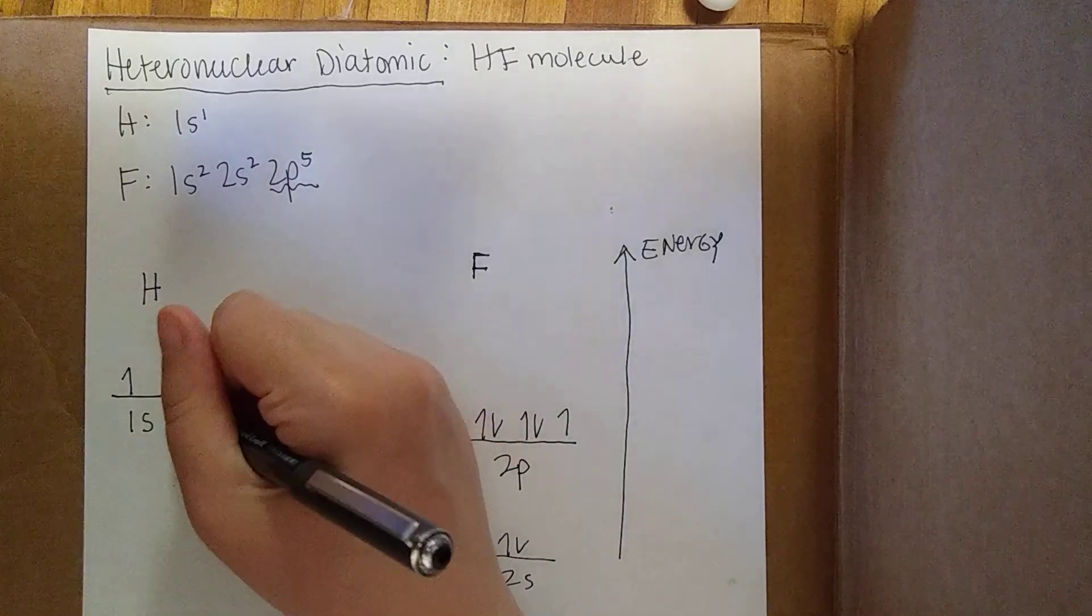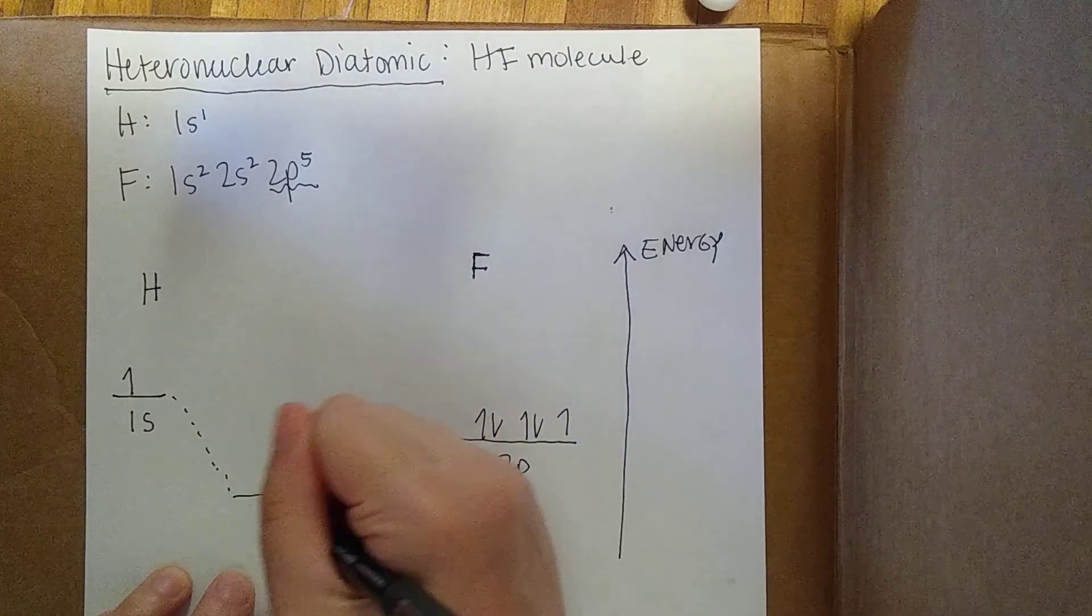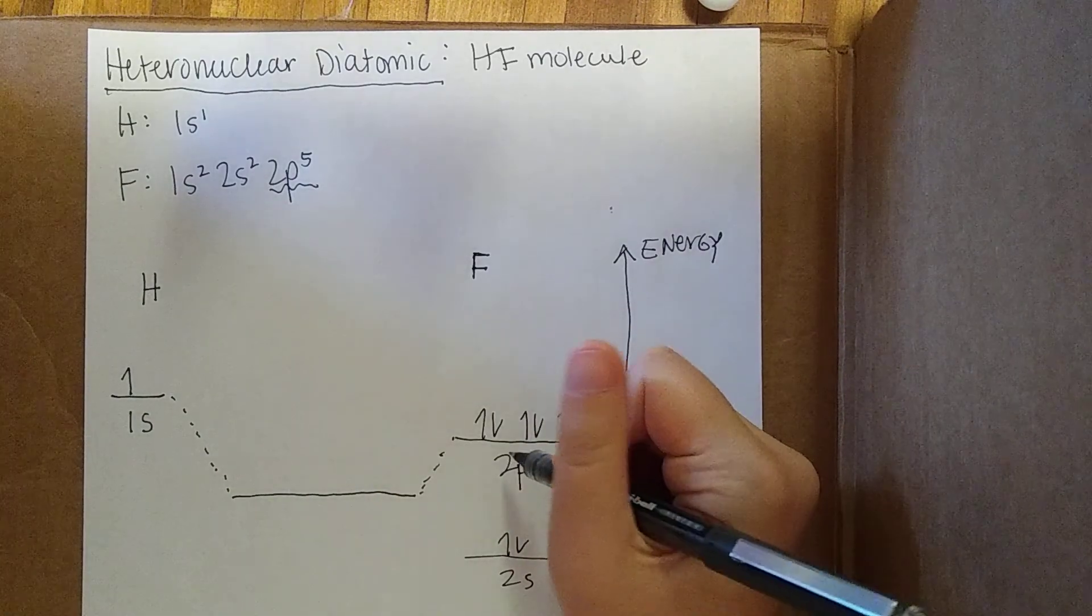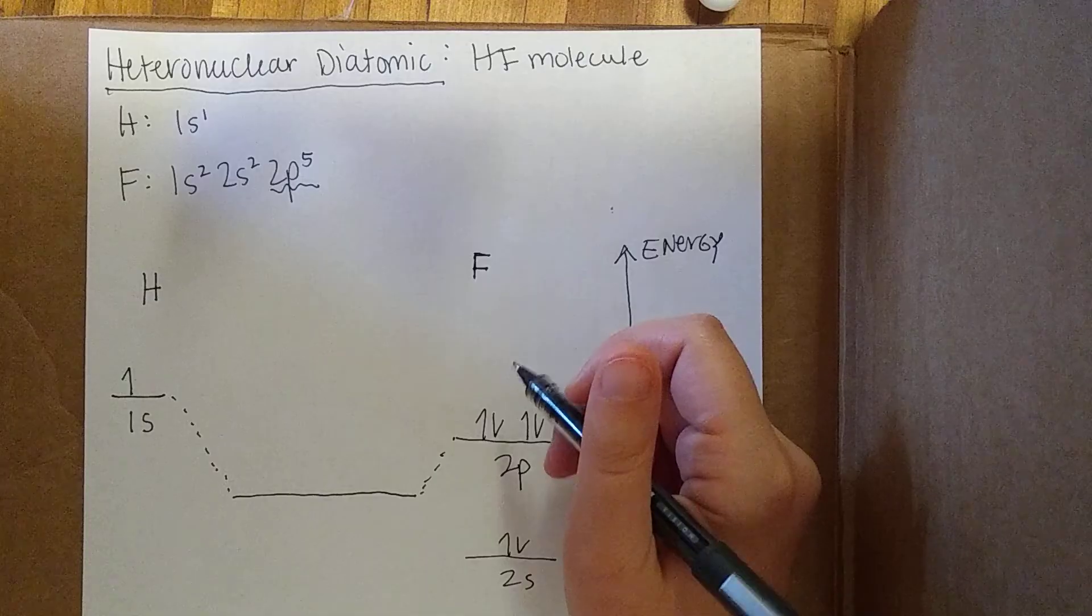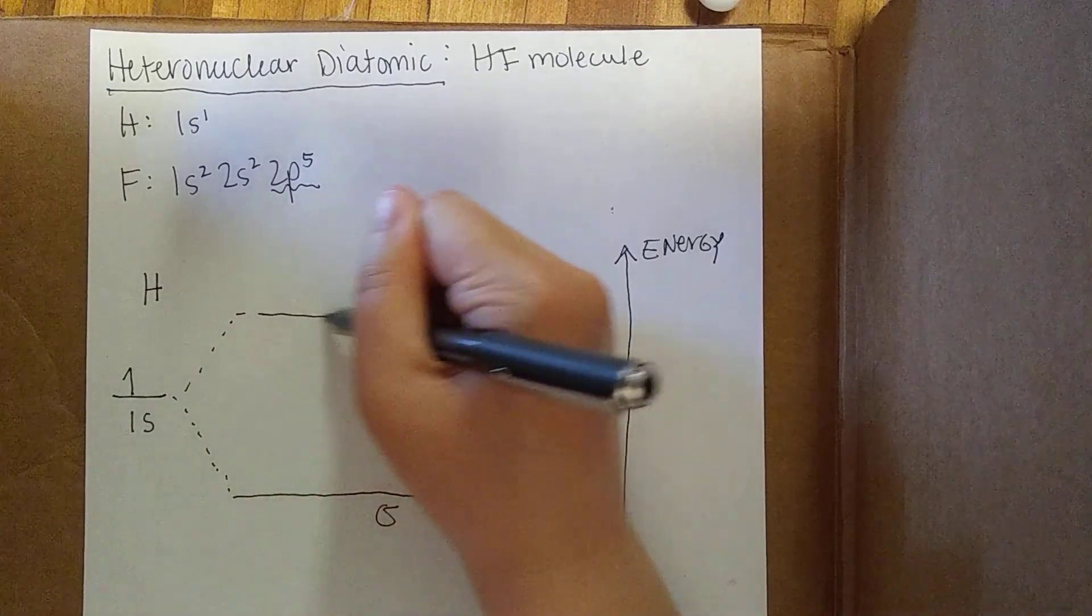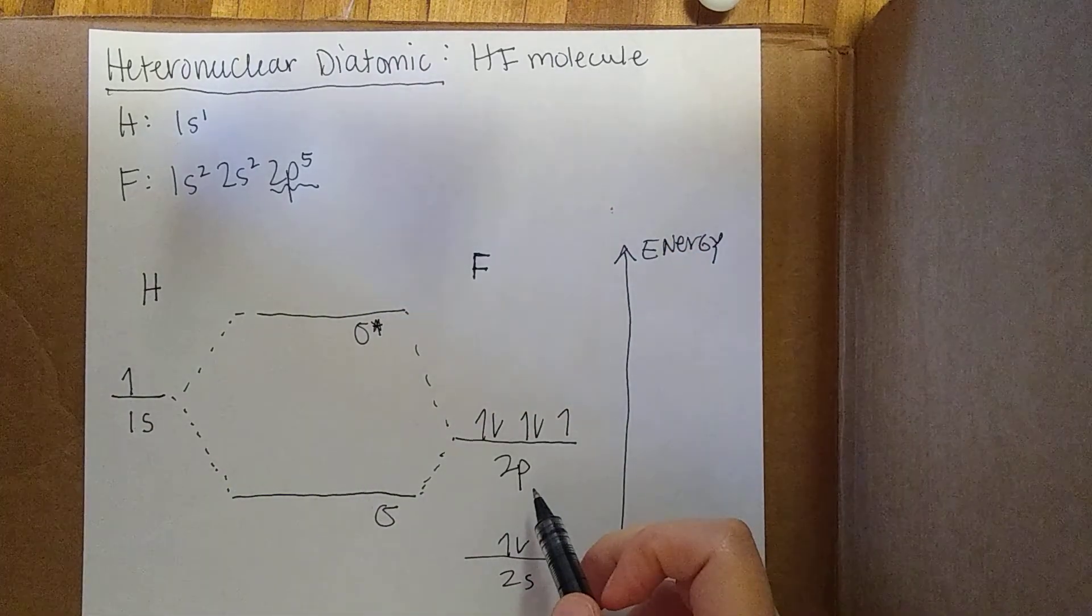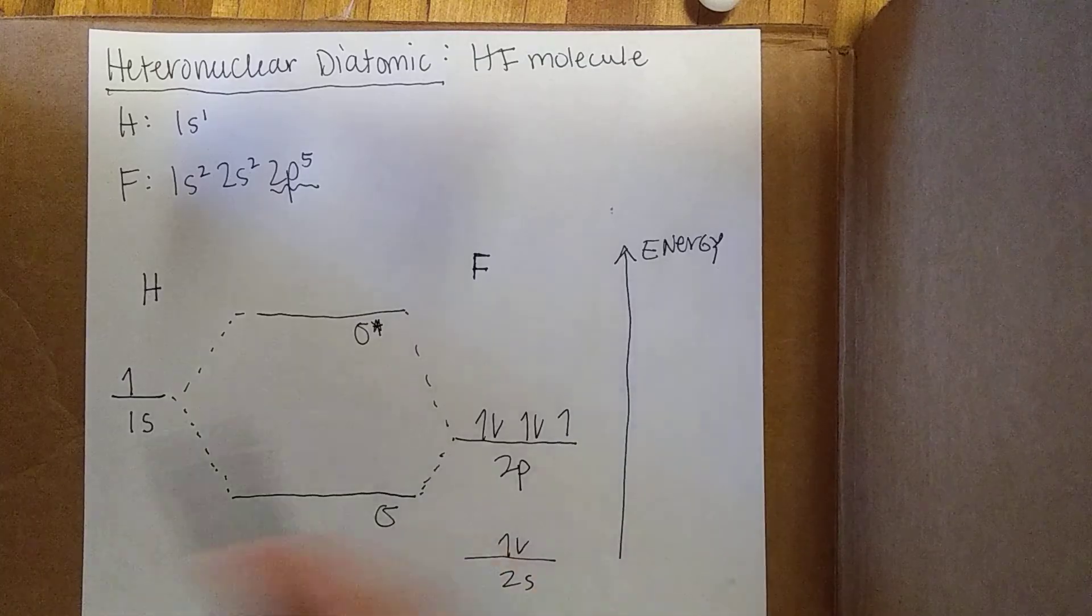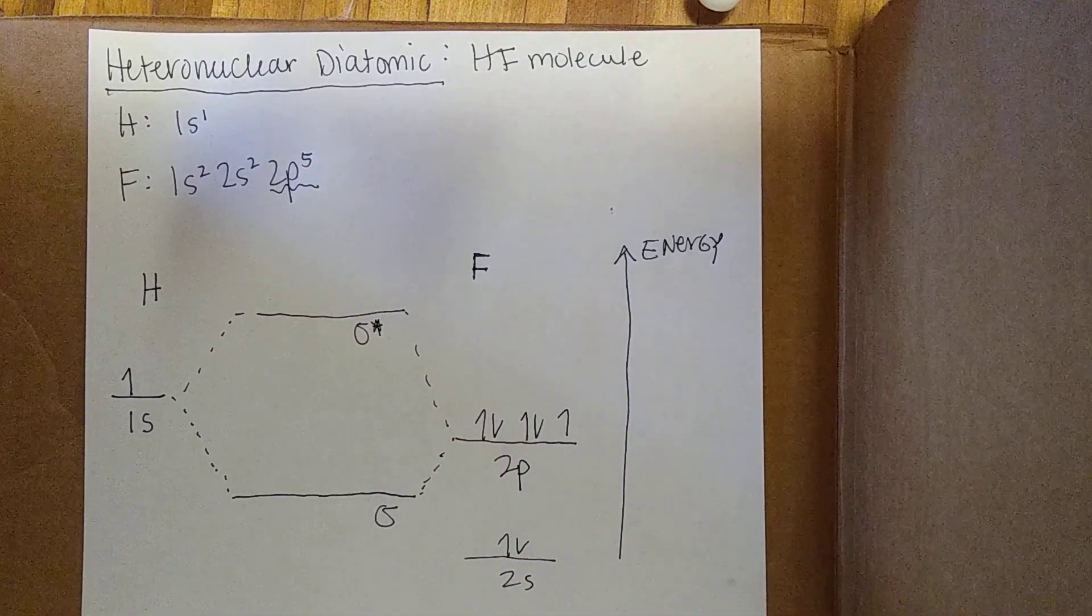Let's form the MOs. We know the 1s is going to overlap with the 2px level to form a sigma bond. So it's going to form a sigma and a sigma star orbital. Remember, the 2px overlaps head-on, so it's going to overlap with this 1s. And these are the orbitals we're going to end up making.